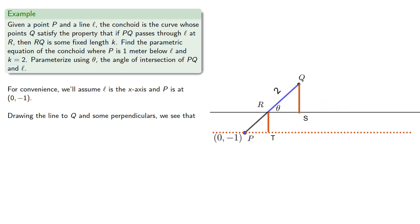We see that QS, that's 2 sin θ, RS, that's 2 cos θ, RT, that's the distance that P is below the axis, that's going to be 1, and PT will be cot θ.